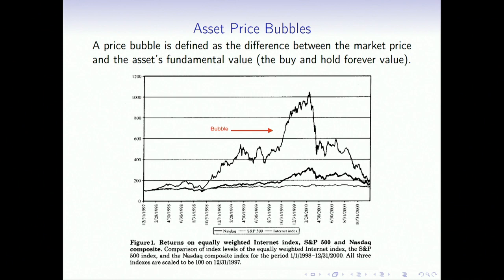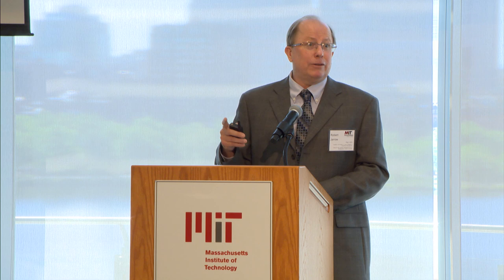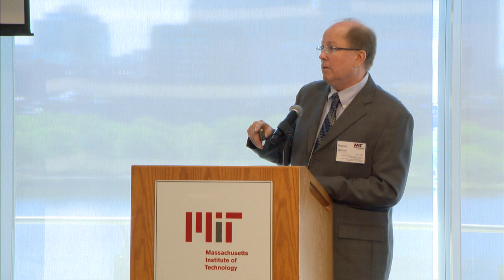So what is a price bubble? A price bubble is defined as a difference between the market price and the fundamental value. The fundamental value I define as the price you would pay to hold an asset forever and never resell it. Think of abstract art: if you ask me to hold a painting forever, I won't pay very much. But if I believe it's valuable to others, I might buy it to retrade it. The difference between the market price and that buy-and-hold-forever value — that's a price bubble.